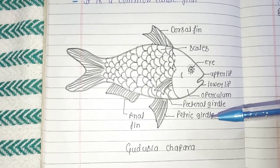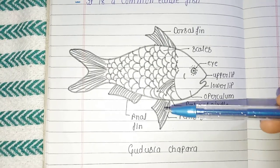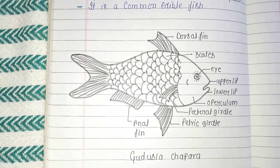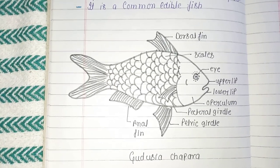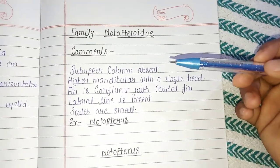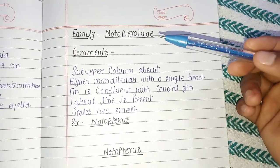Here is a picture of Gudusia chapra showing the dorsal fin, scales, eye, upper lip, lower lip, operculum, pectoral girdle, pelvic girdle, and the anal fin.